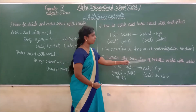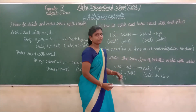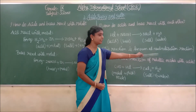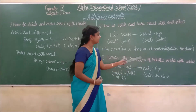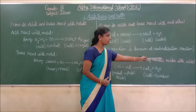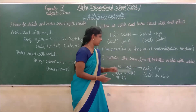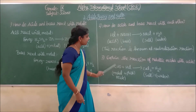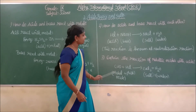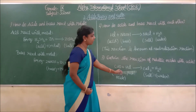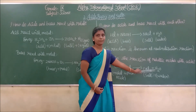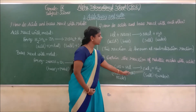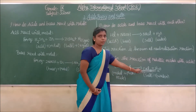Explain the reaction of metallic oxide with acid. What happens when metal oxide reacts with acid? It gives salt and water.